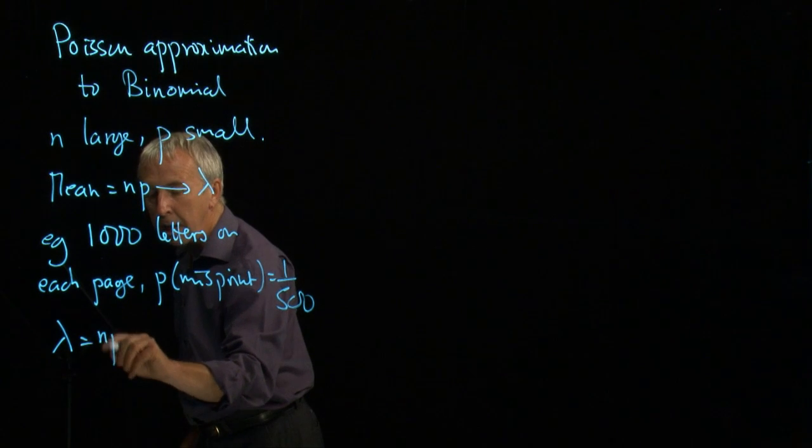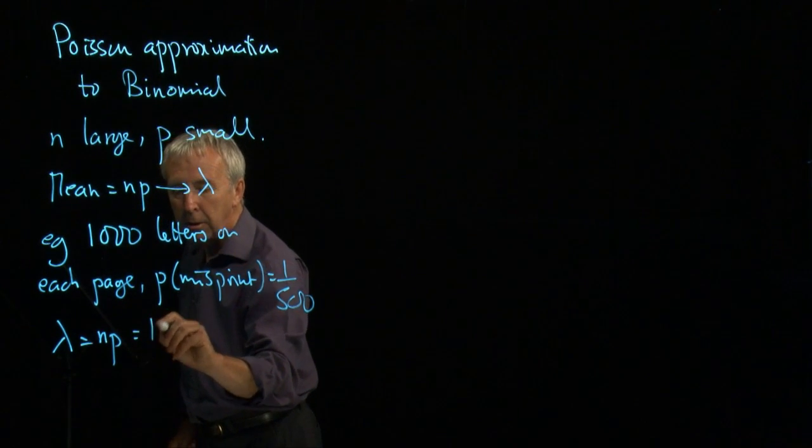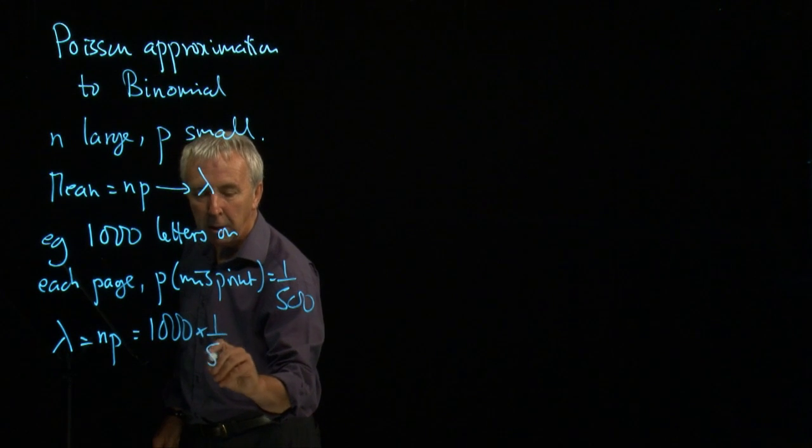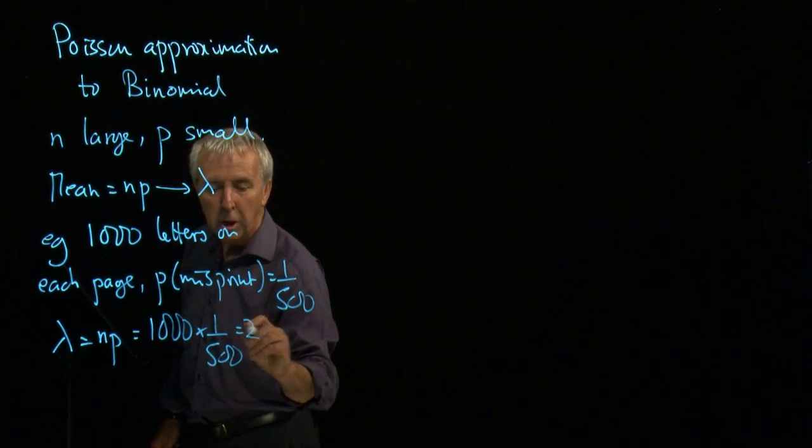So the mean, lambda, is n times p. So that's a thousand times 1 over 500, which equals 2.